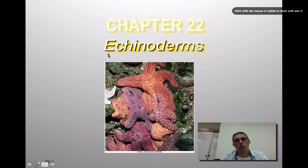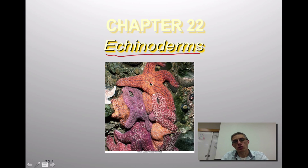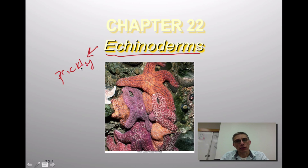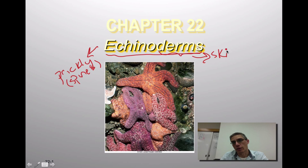Chapter 22 is going to focus on a group of animals called the echinoderms, and down below you'll notice we have a starfish, which is just one of the four members we're going to look at. If you look at the word echinoderm, the first part 'echino' refers to an animal that is somewhat prickly — it has a surface possibly covered in spines. The last part 'derm' refers to the skin of the animal.